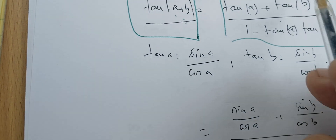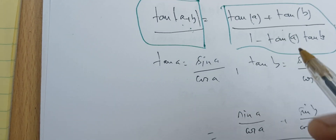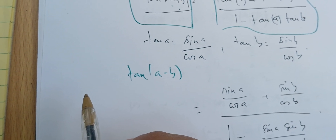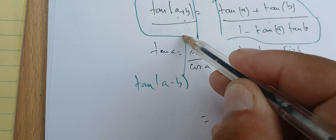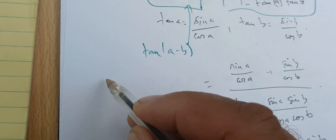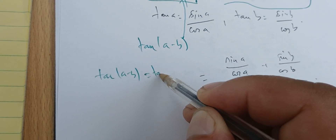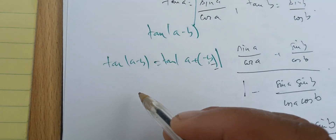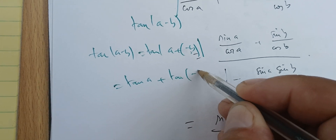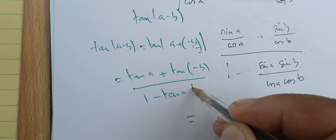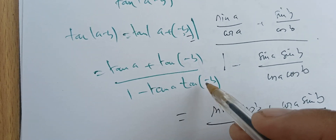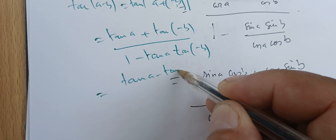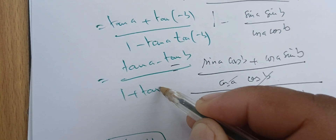Next, using this formula, what is the tangent of a minus b? We can deduce that from here. Tangent of a minus b is tangent of a plus negative b. Plugging in negative b, we get tangent of a plus tangent of negative b over one minus tangent of a tangent of negative b. Since tangent is an odd function, this gives tangent of a minus tangent of b over one plus tangent of a tangent of b.